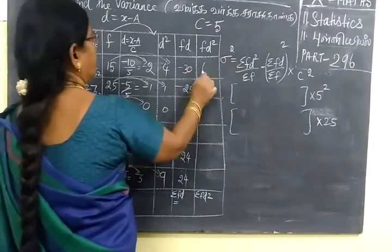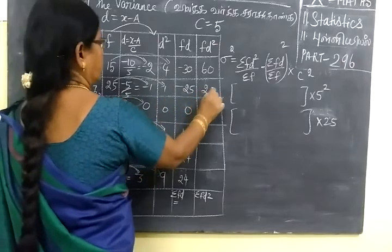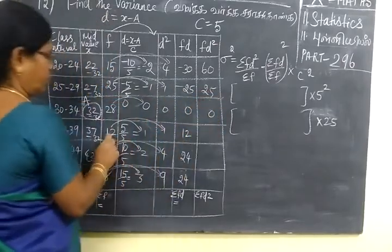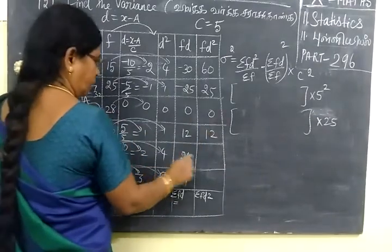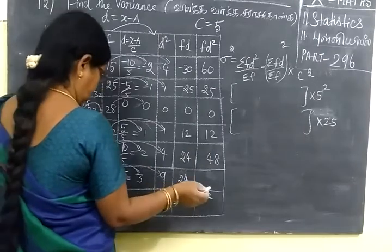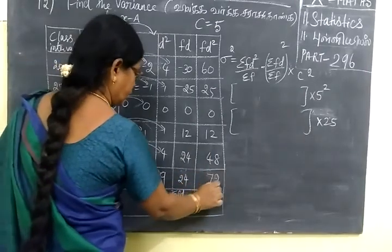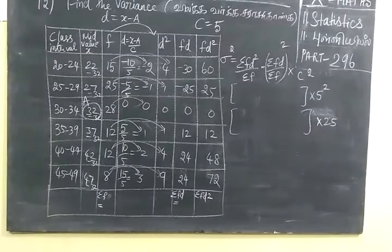So 15 into 4 is 60, 25 into 1 is 25, 0, 12 into 1 is 12, 12 into 4 is 48, then 8 into 9 is 72.